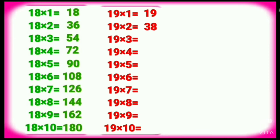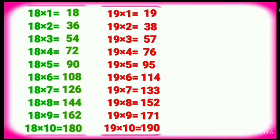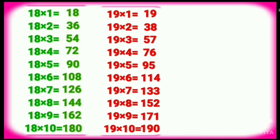Nineteen threes are fifty-seven. Nineteen fours are seventy-six. Nineteen fives are ninety-five. Nineteen sixes are one one four. Nineteen sevens are one thirty-three. Nineteen eights are one fifty-two. Nineteen nines are one seventy-one. Nineteen tens are one hundred ninety.